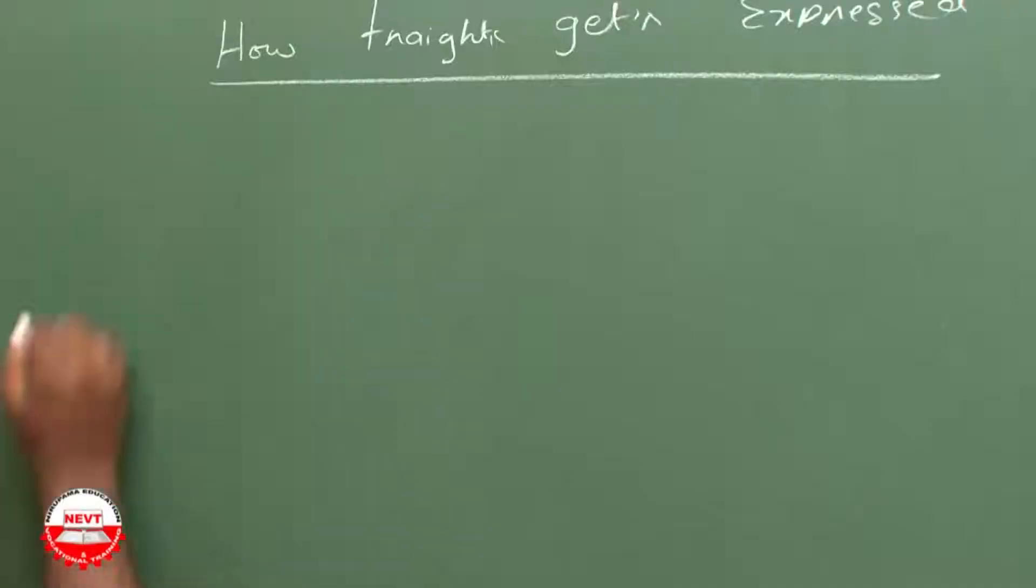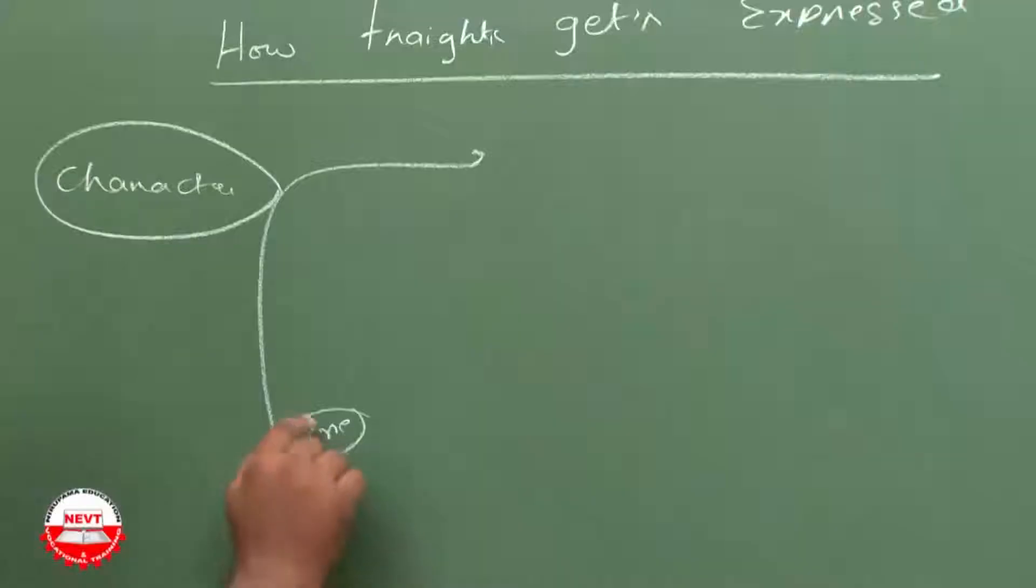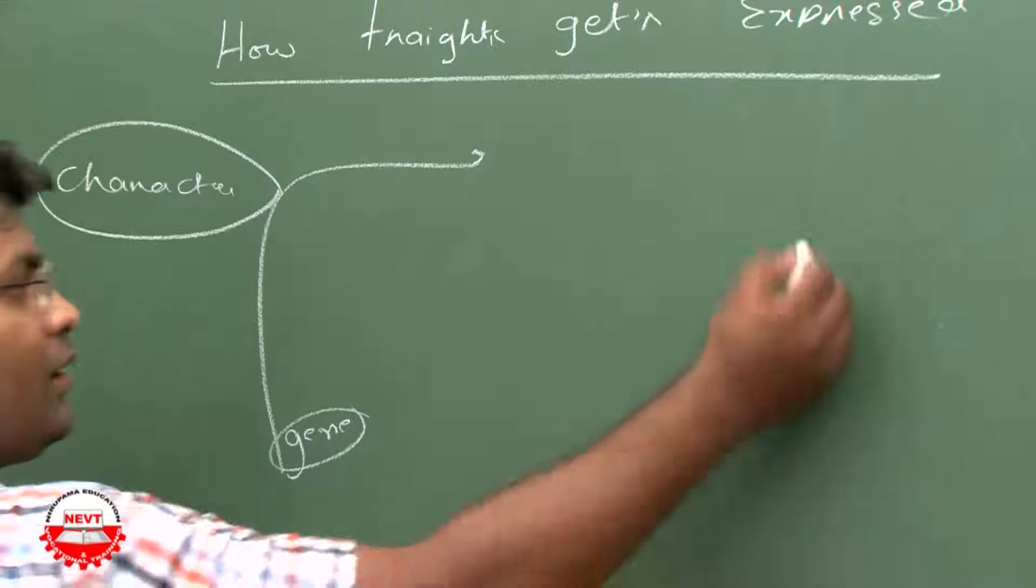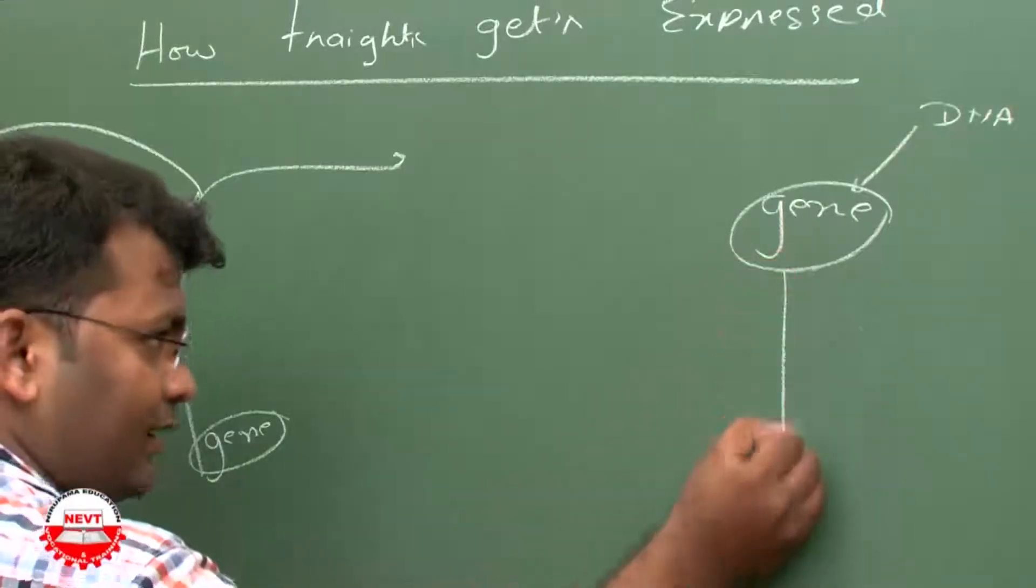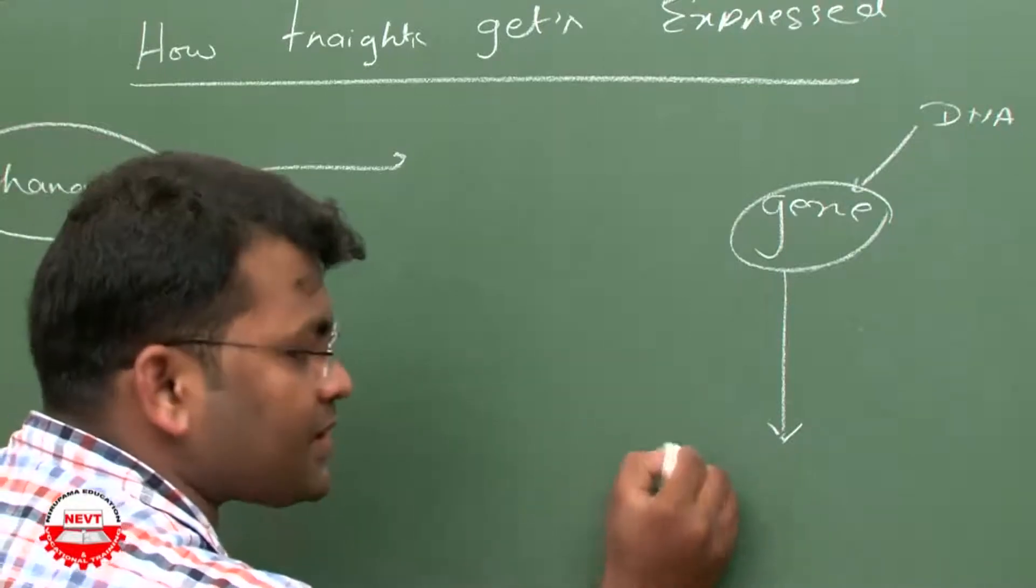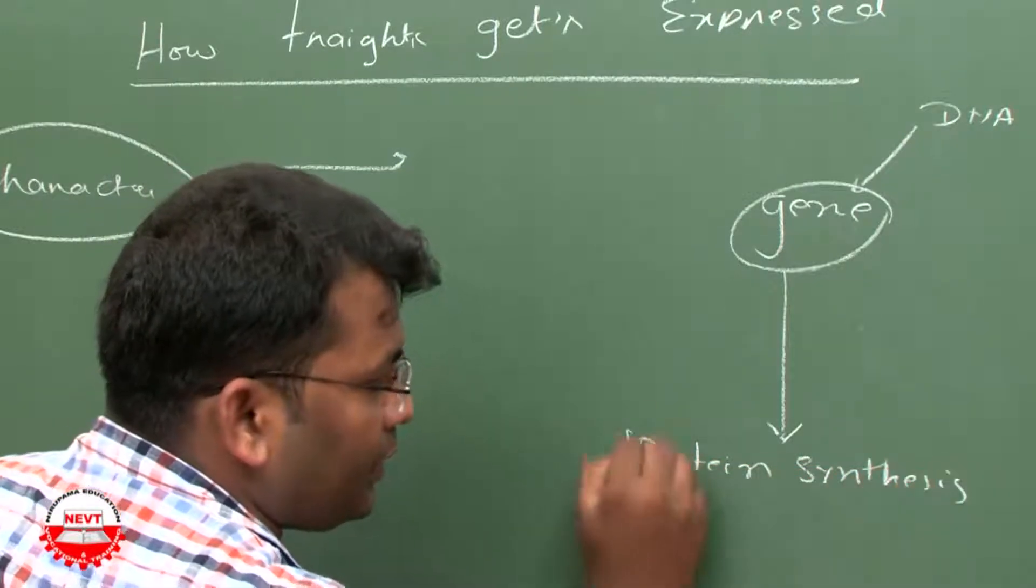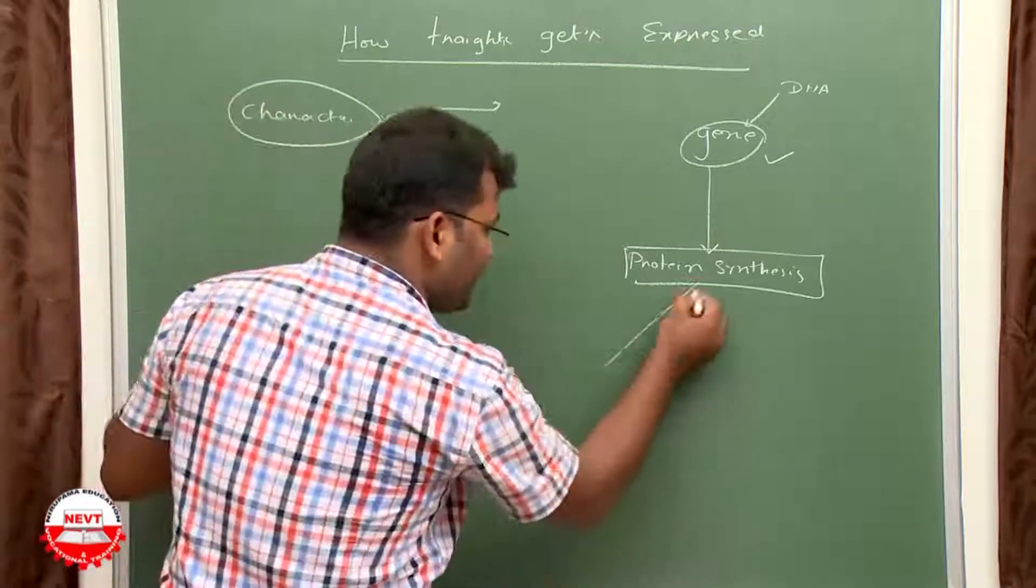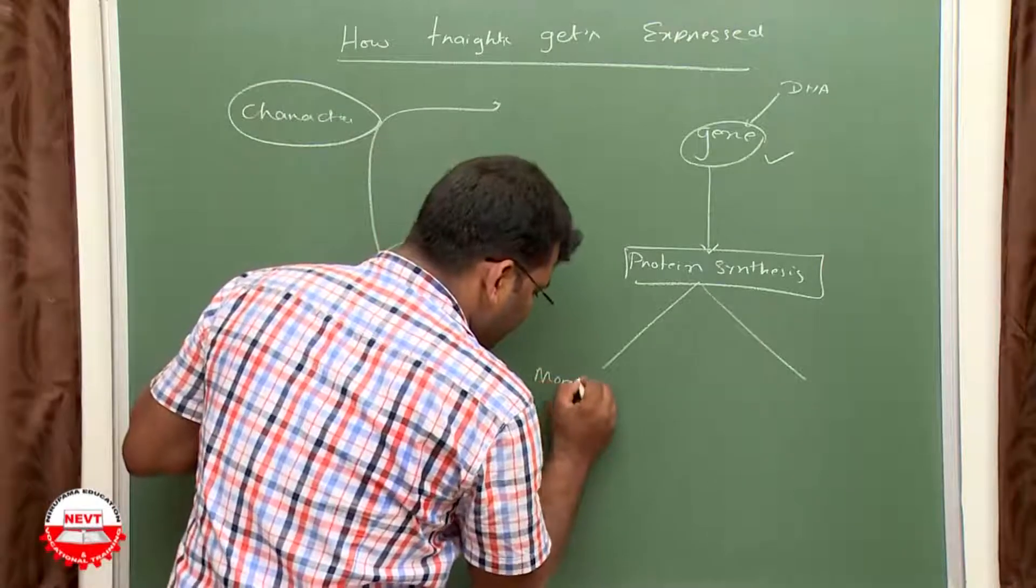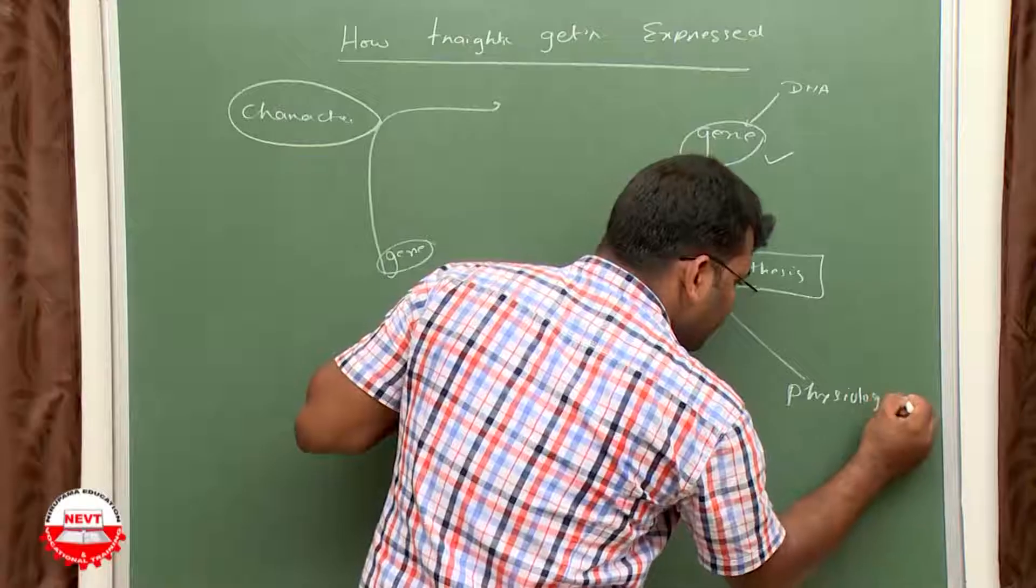How do traits get expressed? Traits are nothing but the characters, and the characters are linked by the gene. Gene is the part of DNA. Gene will control the process of protein synthesis. Protein synthesis is being controlled by specific genes. Specific genes produce specific types of protein, and that protein is responsible for morphological or physiological effects.